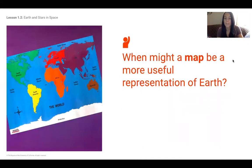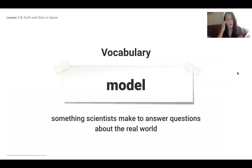When might a map be more useful representation of Earth? When would you want to use a map instead of using a globe to represent Earth? Those are models. So our vocabulary word is model. Something scientists make to answer questions about the real world to show what it may look like and to understand it better.